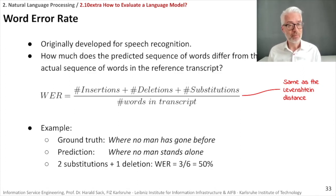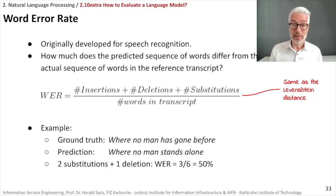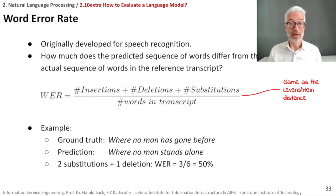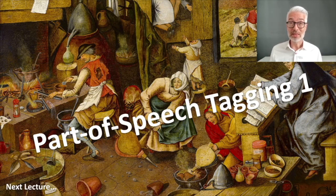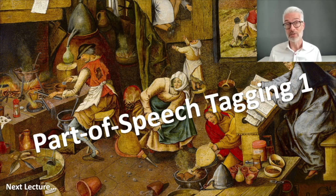This concludes corpus linguistics and the use of statistical language models and n-grams, including how to evaluate your language models. In the next section of the lecture we will continue with one of the last chapters in natural language processing: part-of-speech tagging, where we will find out how to determine the type of a word and the sequence of types in a sentence.